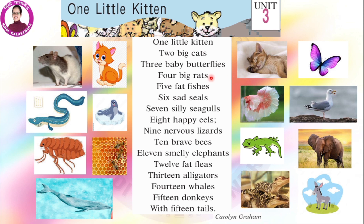A kitten is the baby of a cat. A butterfly is an insect with beautiful colourful wings. This is a rat. There are different types of fishes found in the water. A seal is mostly found in the arctic or antarctic region. A seagull is mostly found near the beaches. An eel is a snake-like fish that lives in the water. Bees go on flowers to collect nectar to make honey. A flea is a small bug-like insect found on the body of a dog or a cat. Alligators look like crocodiles and also live in the water. This is a blue whale and finally this is a donkey.